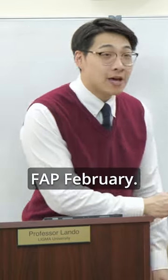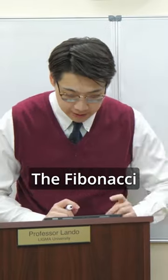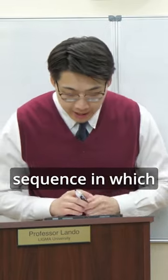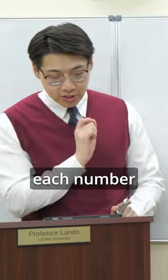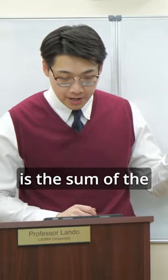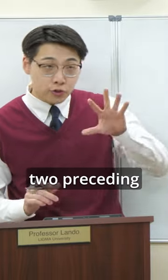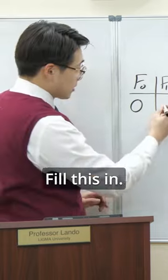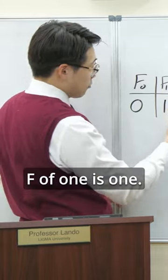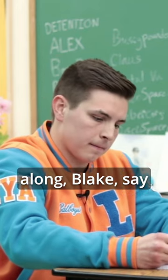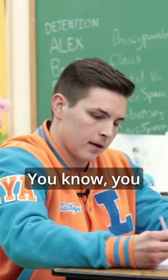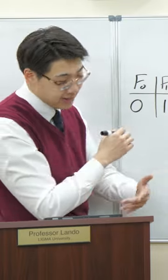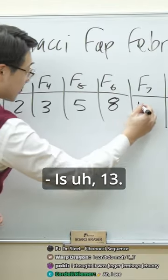It is Fibonacci Fap February. The Fibonacci sequence is a sequence in which each number is the sum of the two preceding numbers. F of one is one — say it along with me — you know what it is, right? F of seven is 13.